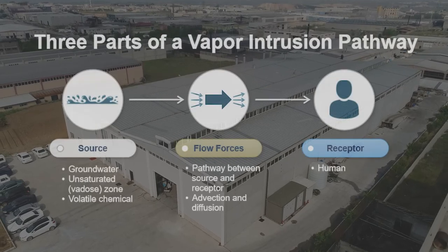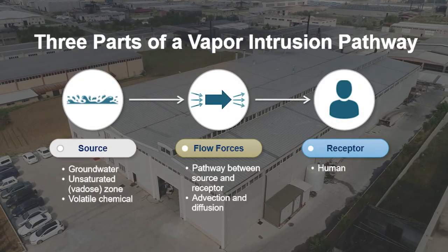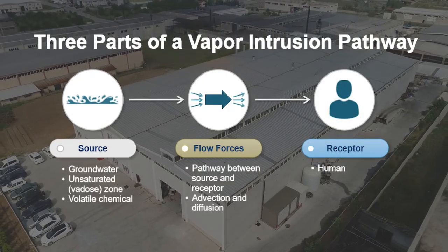Oftentimes on our projects we know that the soil or groundwater is contaminated and there's a building overlying that contamination. Either our client is being required to look at the VI pathway by regulation or they're concerned about the VI pathway, so we can help them understand the pathway possibly without even entering the building.